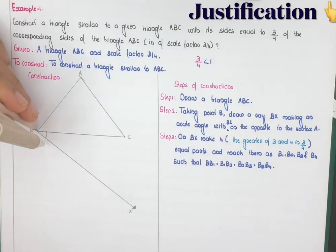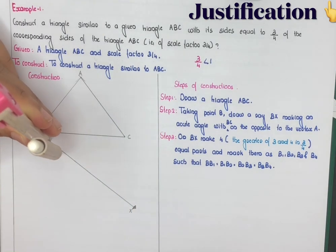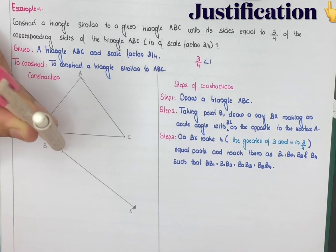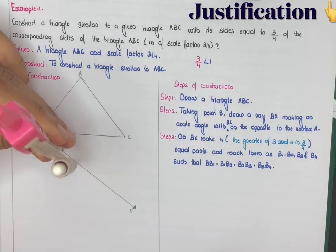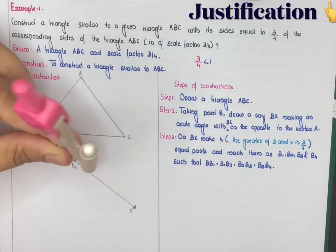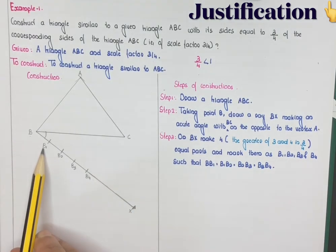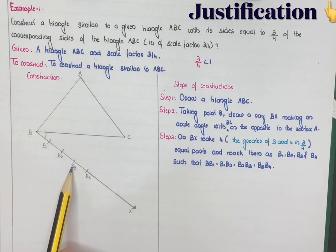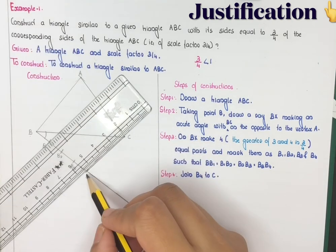Place the compass pin at point B with any measurement and draw an arc to mark B1. With B1 as center and the same radius, draw an arc to mark B2. With B2 as center draw B3, and with B3 as center draw B4, such that BB1 = B1B2 = B2B3 = B3B4. Step 4 — join B4 to C.